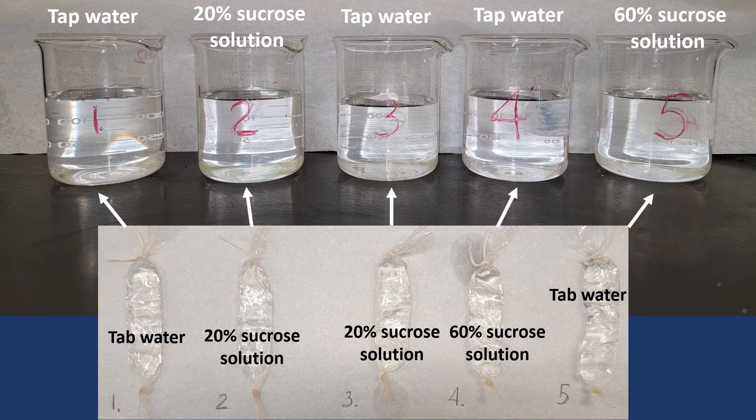What we eventually want to do is submerge our bags into the beakers and observe whether the bag's mass changes or remains the same. Let's develop a hypothesis. In our first set, if we submerge the dialysis bag filled with tap water into the beaker containing tap water, will the bag mass increase, decrease, or stay the same? Think. Is the solution in beaker one hypotonic, hypertonic, or isotonic? You are correct. It is isotonic. Therefore, over time, there should be no change in mass of our bag. The mass will remain the same.